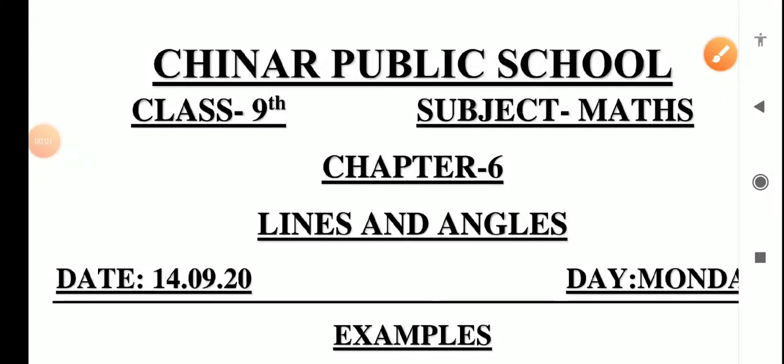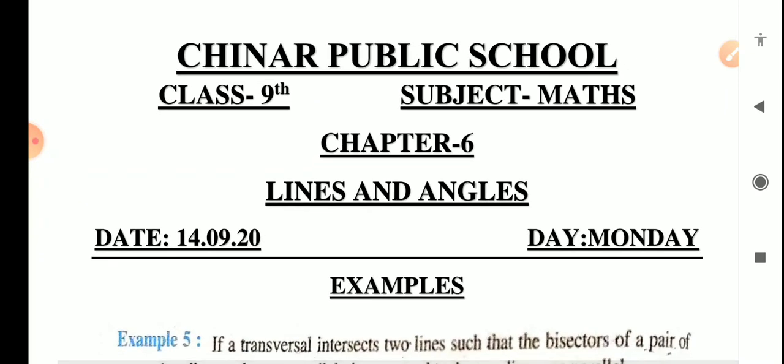Hello everyone. We continue with the same chapter, chapter number 6, Lines and Angles. Today we are doing the remaining examples of this chapter. In the previous module, we have done example number 1, 2, 3 and 4. Now in this module, we are doing example number 5, 6, 7 and 8. After that, our examples of this chapter will be completed.